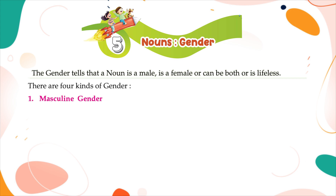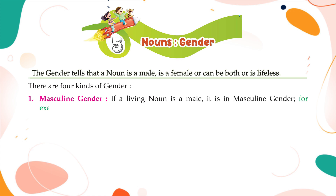Masculine Gender: If a living noun is a male, it is in masculine gender. For example: brother, dog, boy, hero, tiger, husband, poet, son, etc.